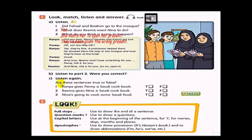Okay. Moving to exercise 1C. Are these sentences true or false? Rania gives Penny a Saudi cookbook. No. The sentence is false. Rima gives Nina a Saudi cookbook. That's true. And it was a mistake. Nina is going to cook some Saudi food. It's also true.